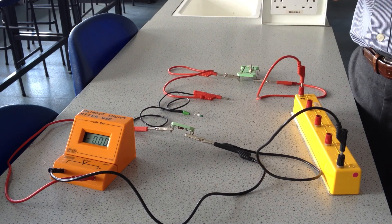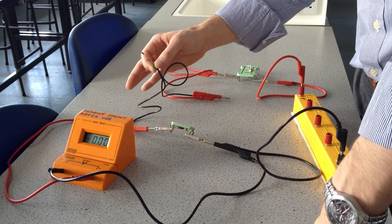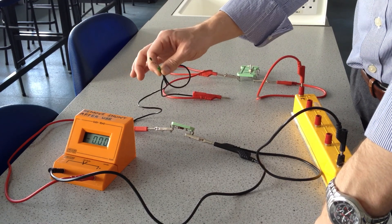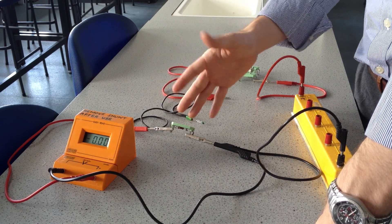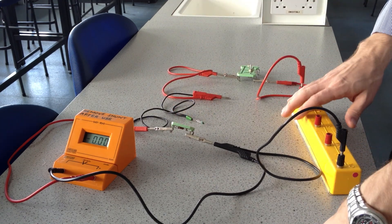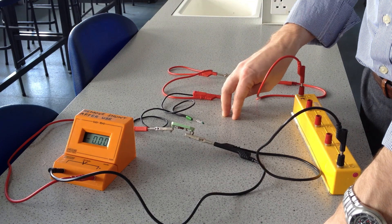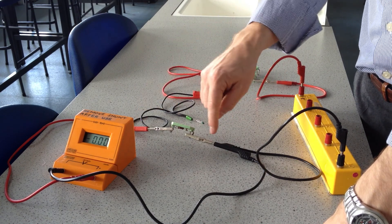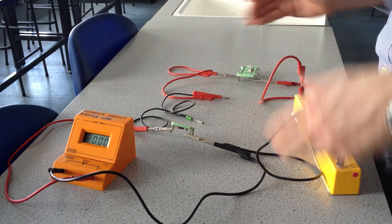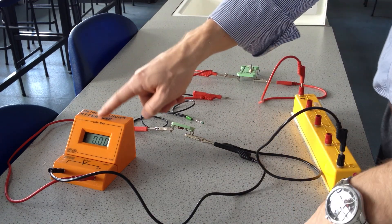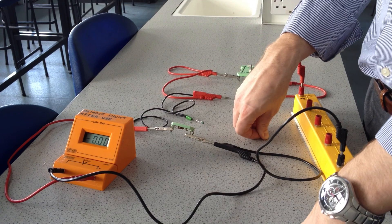So why does this happen? When I increase the temperature of the thermistor, its resistance decreases. And that means its share of the voltage from the supply decreases. And therefore the voltage across the fixed resistor must increase so that the total voltage remains constant. And that is why we saw the voltage increasing here.